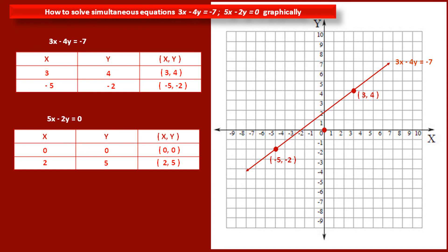Now we have to plot these two points on our graph page. The first point is (0, 0) — both x and y coordinates are 0, so it is at the origin. The second point is (2, 5) — x coordinate 2 and y coordinate 5. We draw a second line passing through these two points, having equation 5x minus 2y is equal to 0. This line is the graph of the second equation.